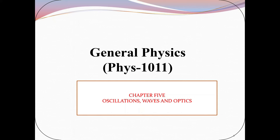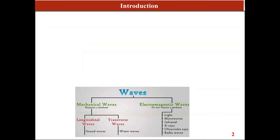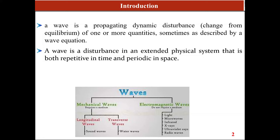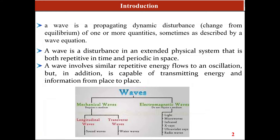This is Chapter 5 of General Physics 101, all about oscillation, waves, and optics. A wave is a propagating dynamic disturbance of one or more quantities from equilibrium, sometimes described by the wave equation. A wave is a disturbance in an extended physical system that is both repetitive in time and periodic in space. It involves repetitive energy flow and is capable of transmitting energy and information from place to place.